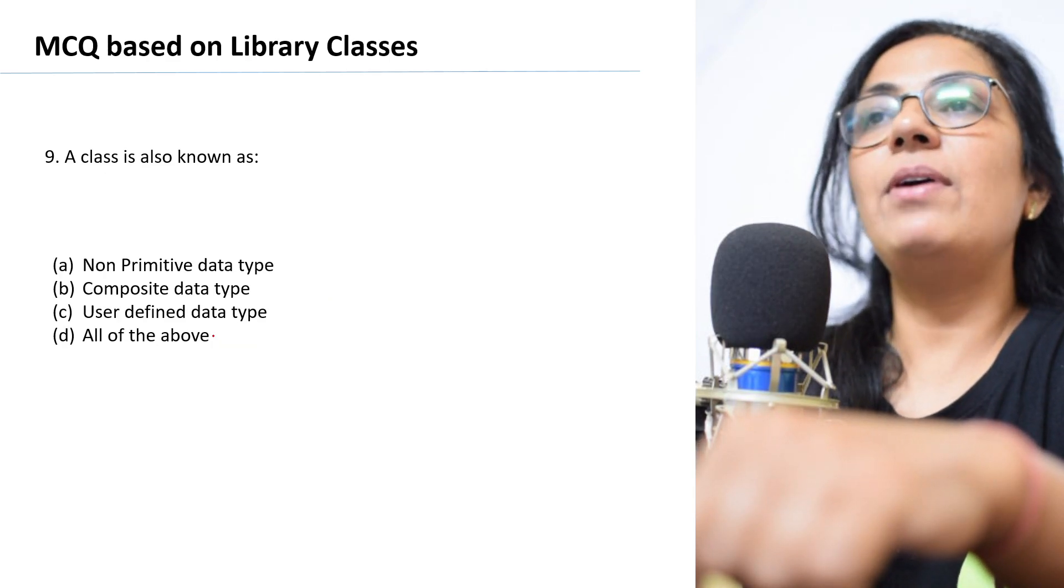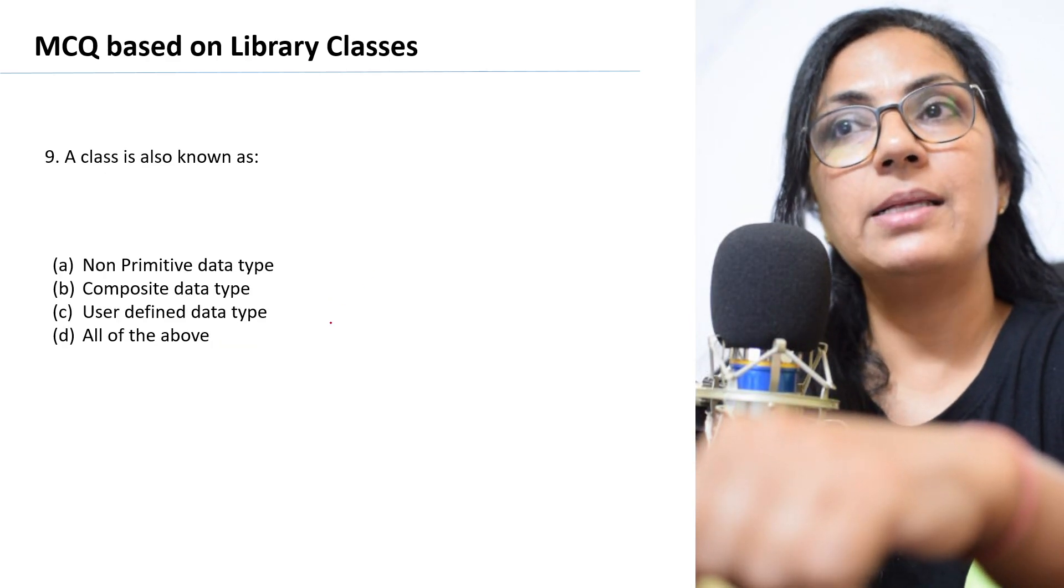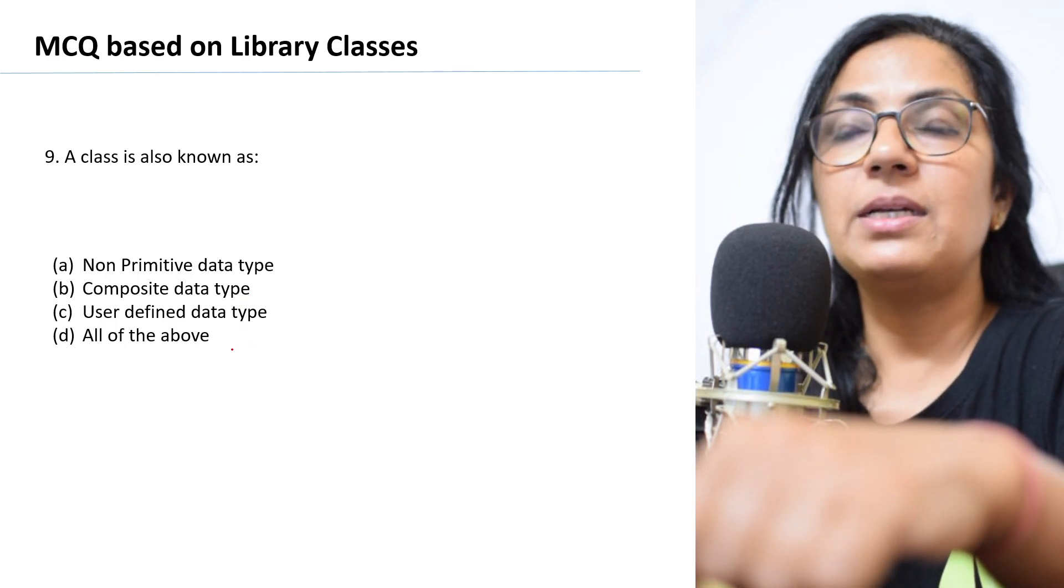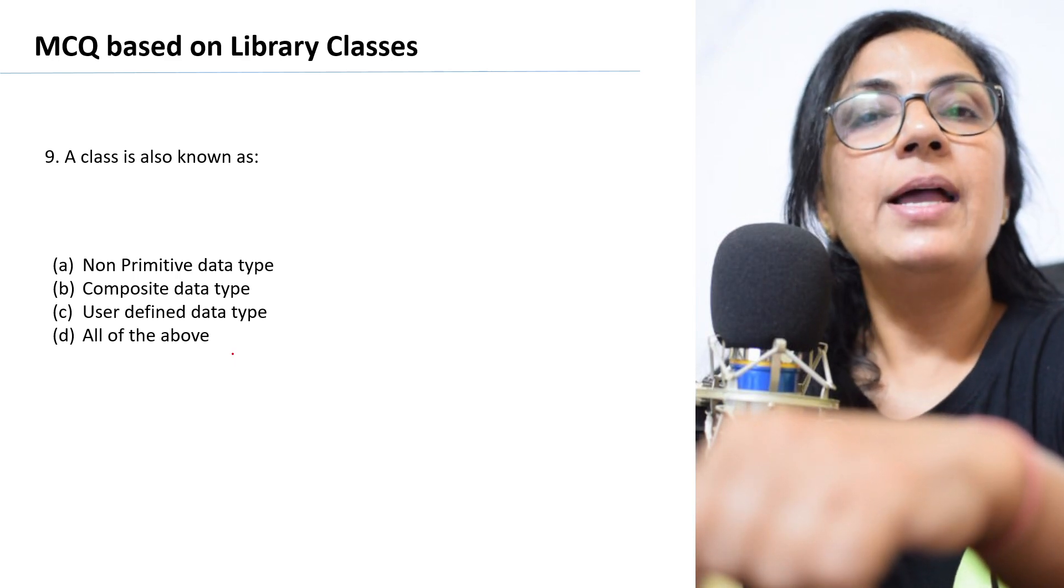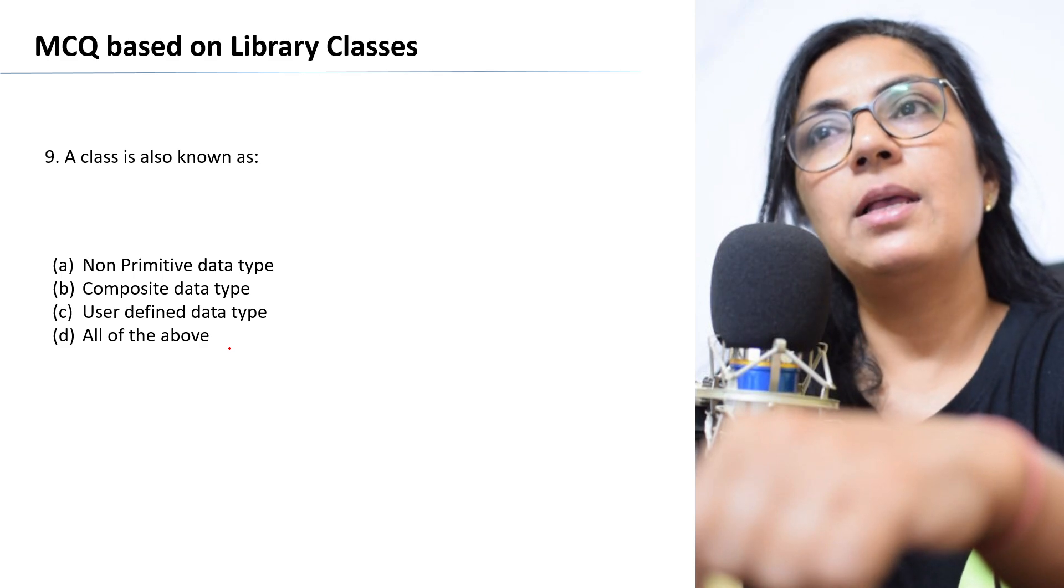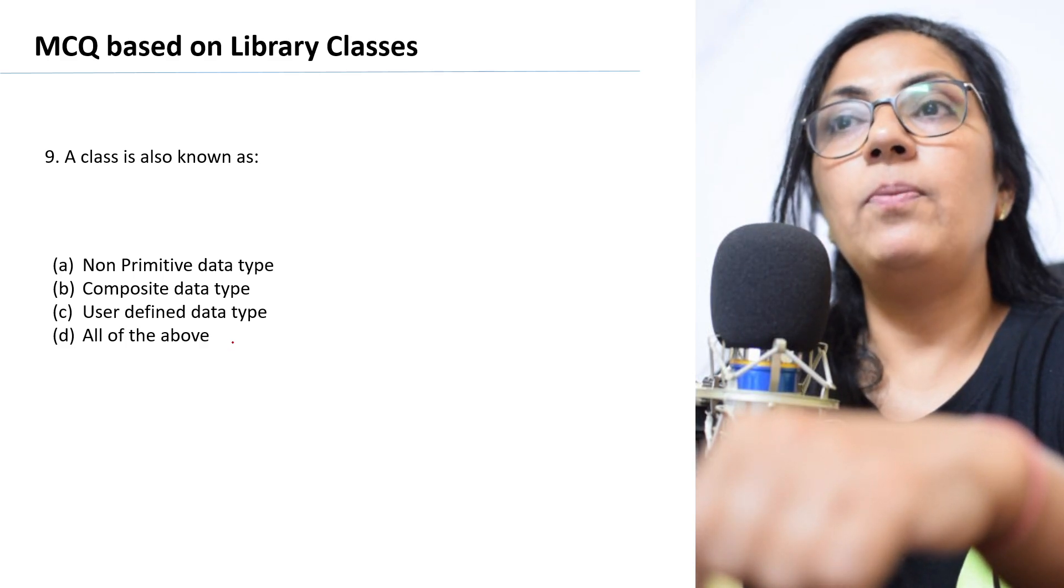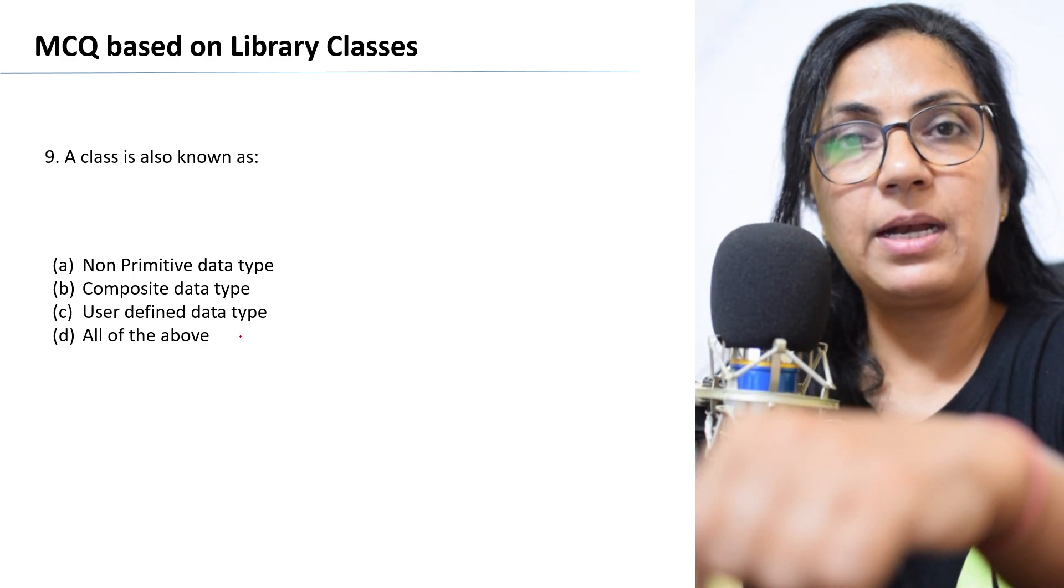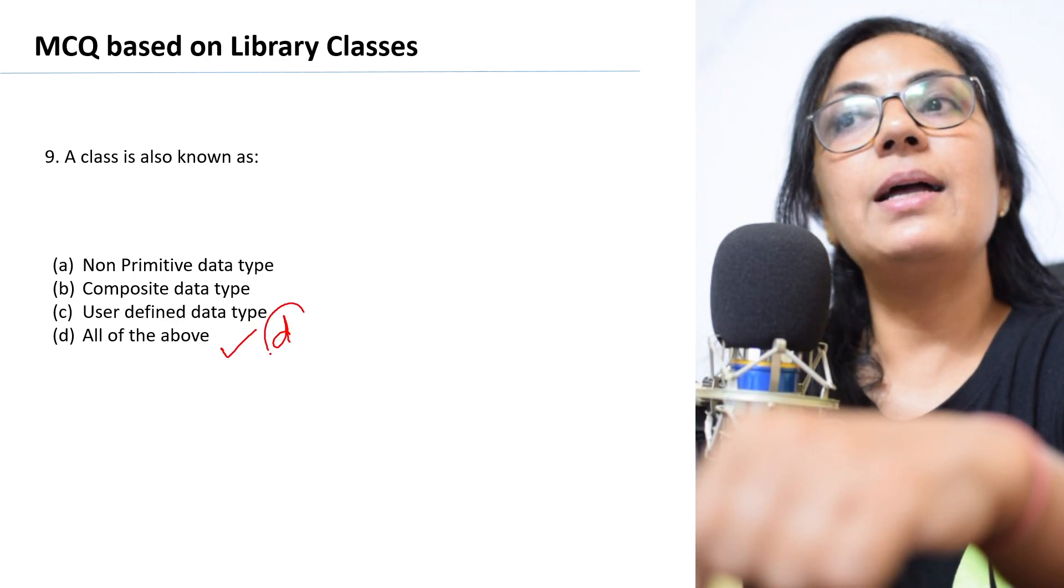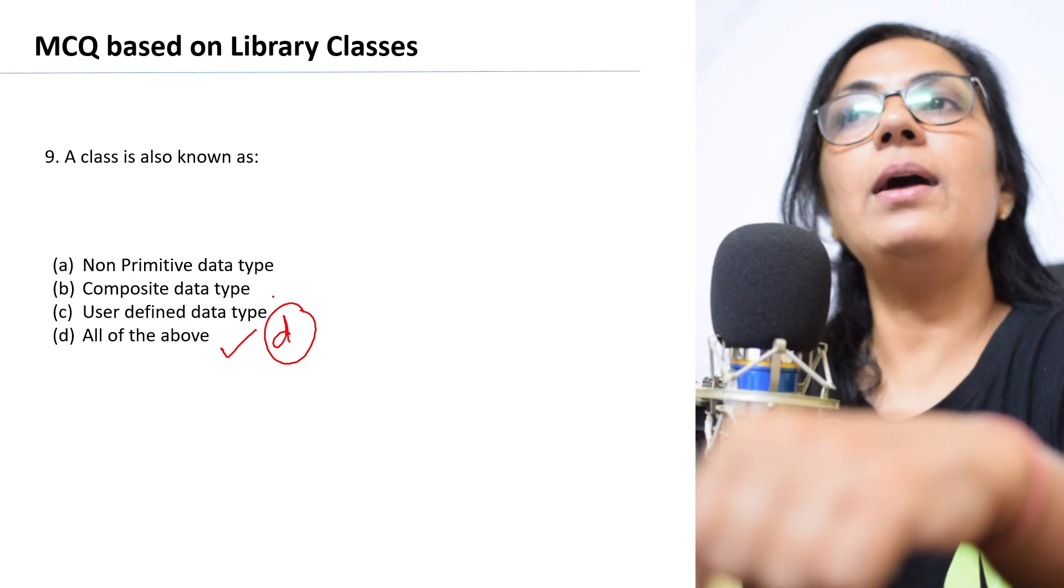Next, we have: a class is also known as non-primitive data type, composite data type, user defined data type, or all of the above. Children, the definition of class you have done in many ways. Class is non-primitive data type, it is composite also, it is user defined. So option D is the correct answer, that is all of the above.